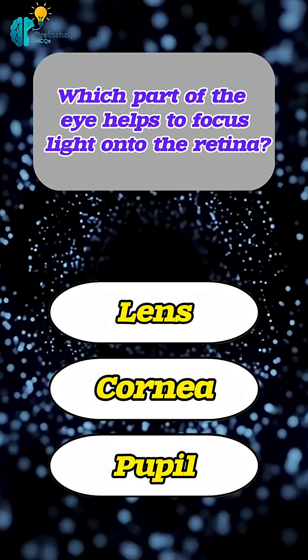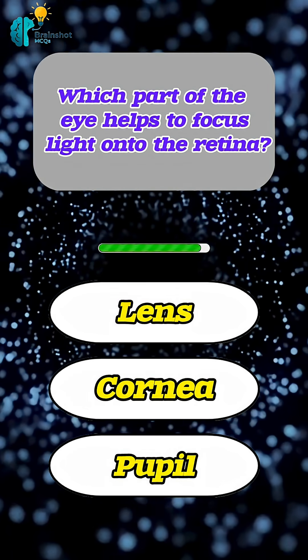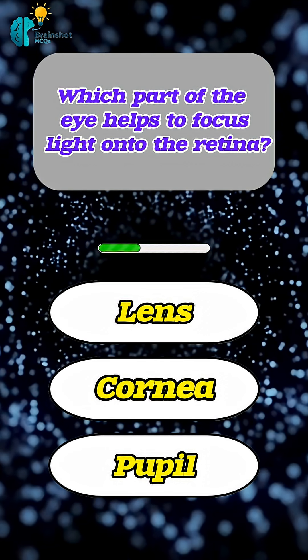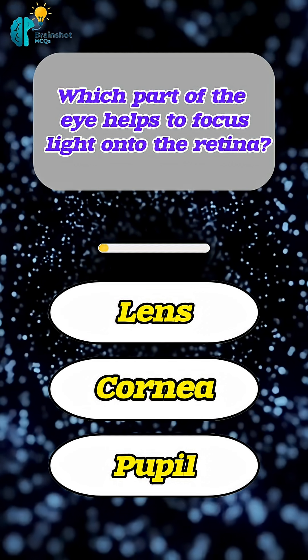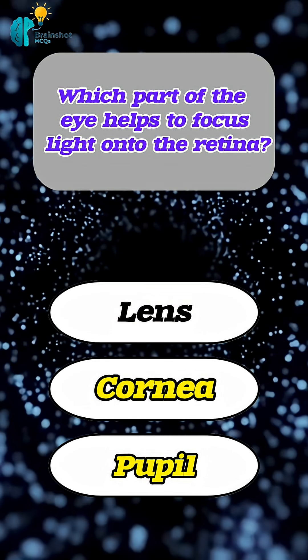Which part of the eye helps to focus light onto the retina? Correct answer: lens.